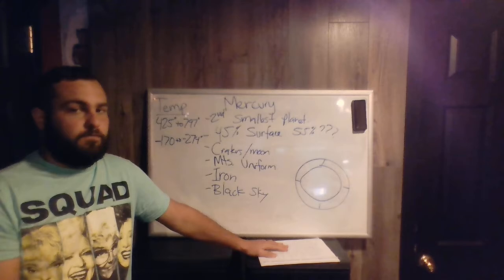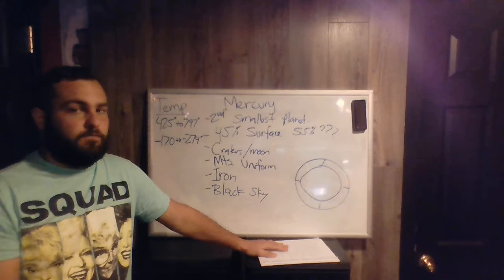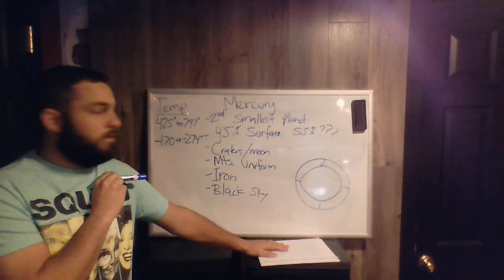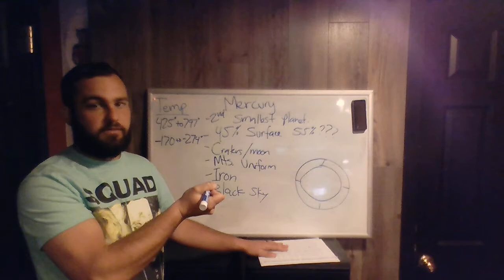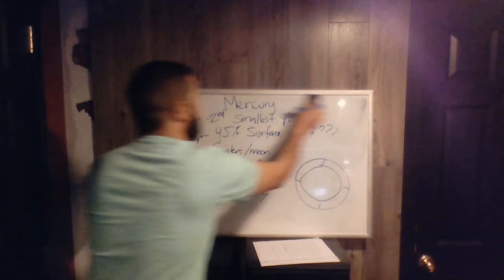Your assignment at the end of this section is going to be looking for more fun facts or interesting things about Mercury and writing a paper on them. You are welcome to use some of this information in your paper, but I do need to see new stuff that I'm going to let you guys discover. You're going to give me where you found that information. So let me erase the board quickly, because the next one we're going to talk about is Venus.